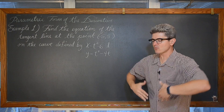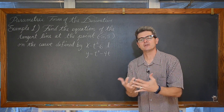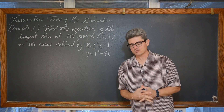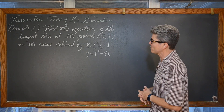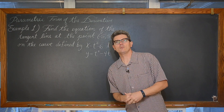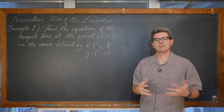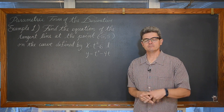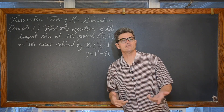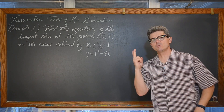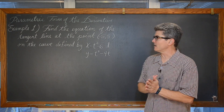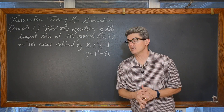In this calculus lesson we are going to extend on our new knowledge about how to find derivatives of parametric functions, or functions defined by parametric equations. We just got done talking about how we determined intervals where parametric equations are increasing and decreasing, and concave up and concave down. We are going to do two examples in this video of finding the equation of a tangent line at a given point.